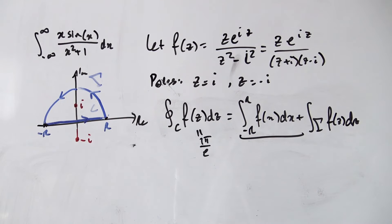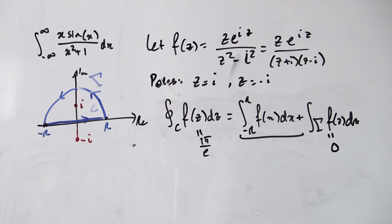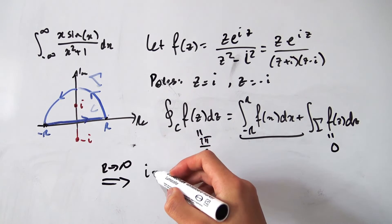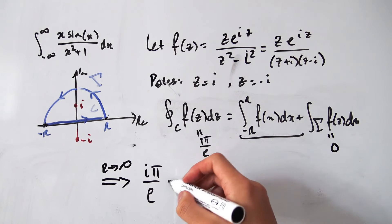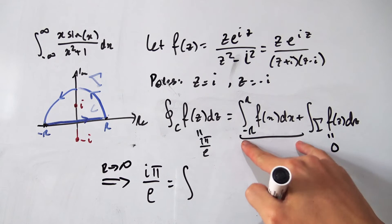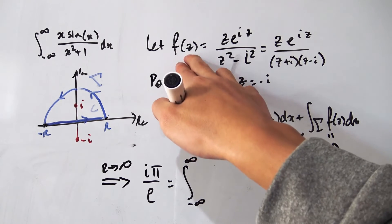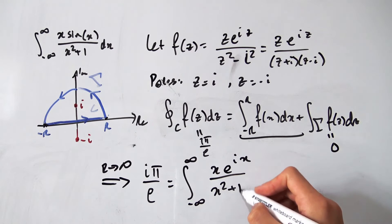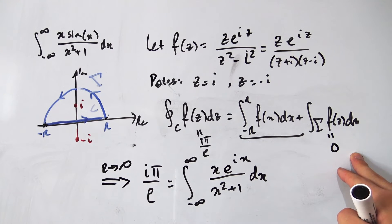After all that work, we've found that the integral over gamma evaluates to 0 — it contributes absolutely nothing to the contour. Now we're ready to put everything together. In the limit as R → ∞, the contour integral over C is still iπ/e, and the integral from −R to R becomes the integral from −∞ to ∞ of x·e^(ix) / (x² + 1) dx.